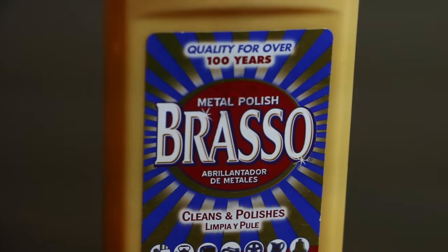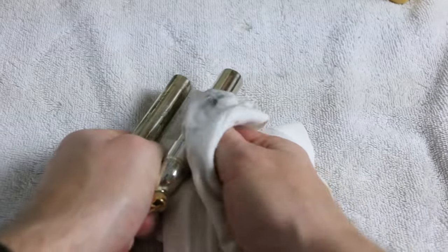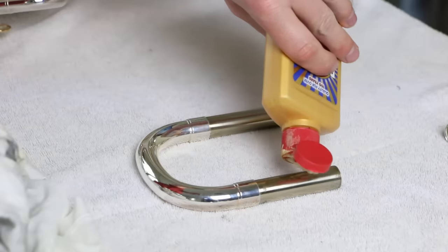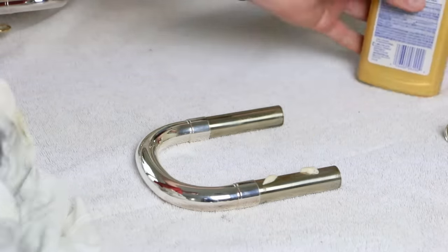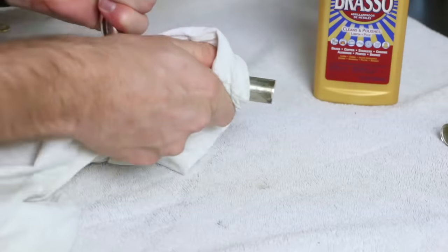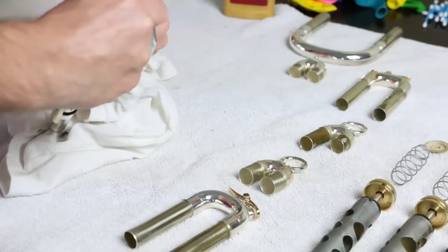Grab the Brasso. This is for your slides. This stuff is awesome. It gets rid of any oil and tarnish on your slides. It basically makes them look and run like new. Squeeze a good amount onto a slide and use a t-shirt to clean and wipe it off. You may have to do this a few times and you'll have to use a good bit of elbow grease. It takes some work, but the results are fantastic.